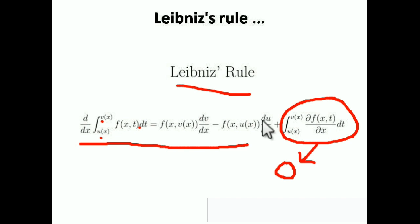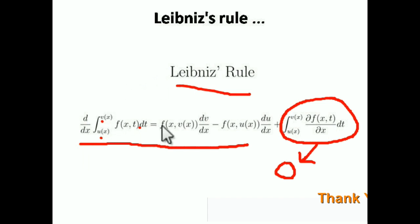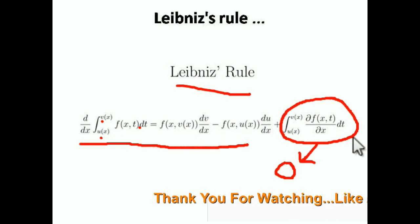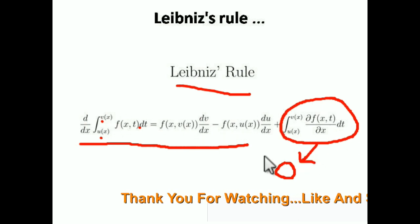This rule can be asked directly in the examination — you can have questions directly involving differentiation of a definite integration. It can also be used in applications of derivatives, applications of integration, and in function-related chapters. Please remember: upper limit in the function multiplied by the differentiation of the upper limit, minus lower limit in the function multiplied by the differentiation of the lower limit. The partial derivative part is almost always going to be zero.